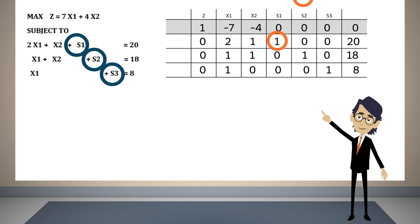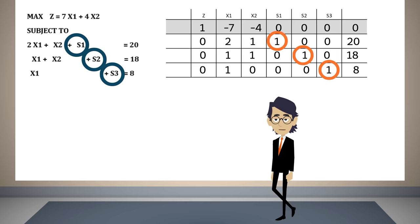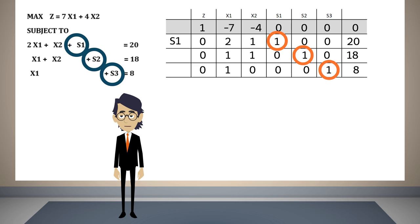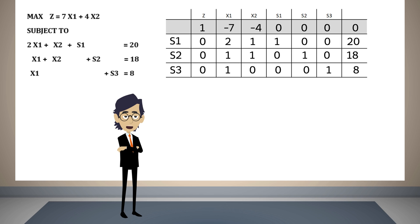These variables are called basic variables. In this case, s1 will be basic in the first row, s2 will be basic in the second row, and s3 will be basic in the third row. If s1 is 20, s2 is 18, and s3 is 8, then the value of the variables x1 and x2 is 0, and therefore the value of z is also 0.